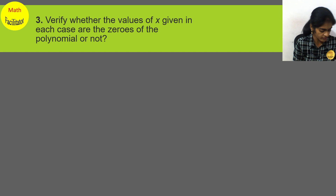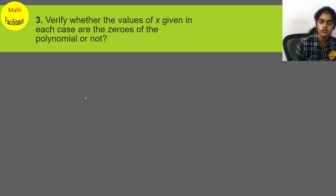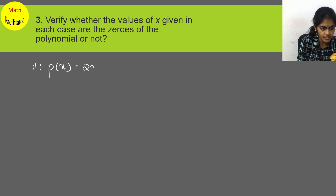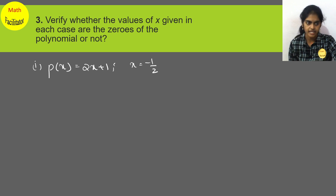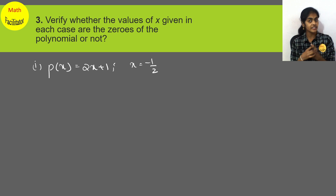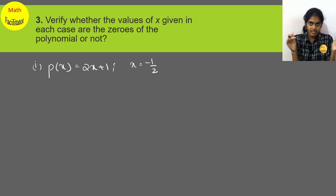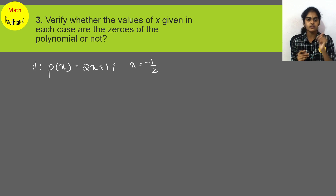Third question: verify whether the values of x given in each case are zeros of the polynomial or not. The meaning of zero of the polynomial: if you substitute any value for x and the entire value of the polynomial becomes 0, then that value is called a zero of the polynomial.